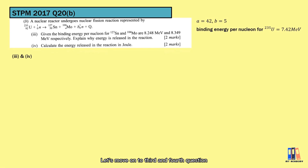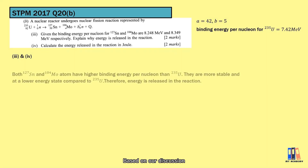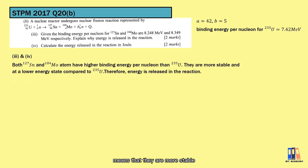Moving on to the third and fourth questions: we are given the binding energy per nucleon of Sn and Mo nuclei, and we can see they have higher values compared to uranium. Higher binding energy per nucleon means they are more stable and at a lower energy state, therefore there is energy released in the reaction.